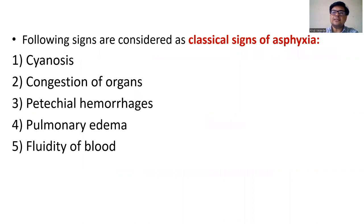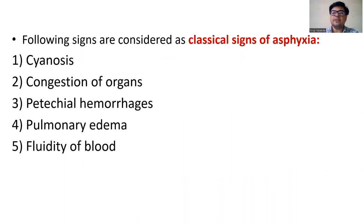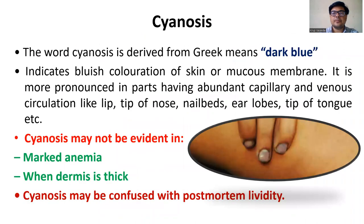So let us see the classical signs of asphyxia. The first one is cyanosis, second one is congestion of organs, third one is petechial hemorrhages, fourth one is pulmonary edema, and fifth one is fluidity of blood.